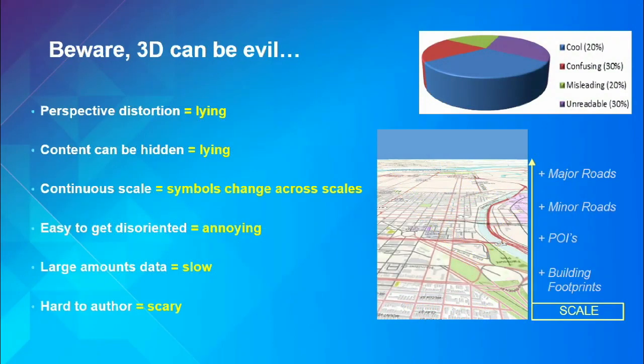3D sounds great, but I can't continue without warning you that 3D can be evil. If you look at that top-right pie chart, the blue wedge at the front looks enormous. But if we looked at that same pie chart from directly above, you'd see it's actually a small piece — only 20% of the chart. We've used perspective distortion by moving the camera down and zooming in really close to something, making it fill the whole screen and feel super important. That screenshot is lying to you — or if you did it, you are lying on purpose to someone. Be careful with perspective distortion.